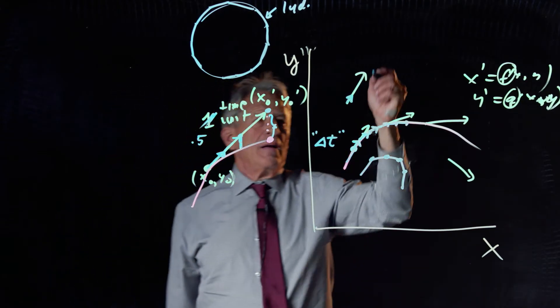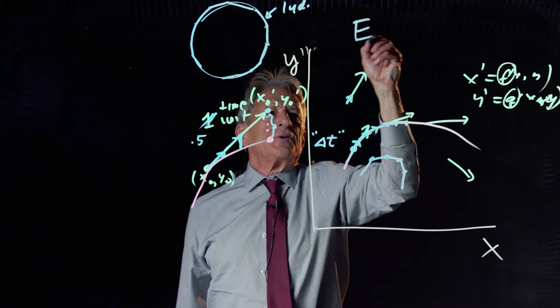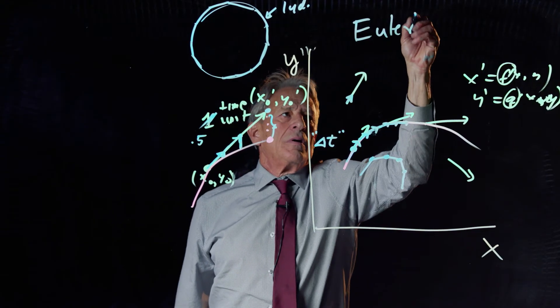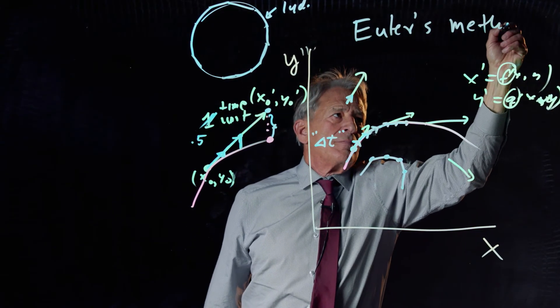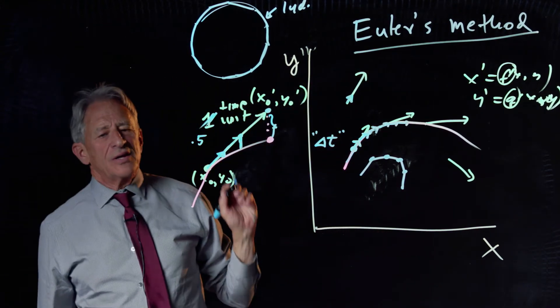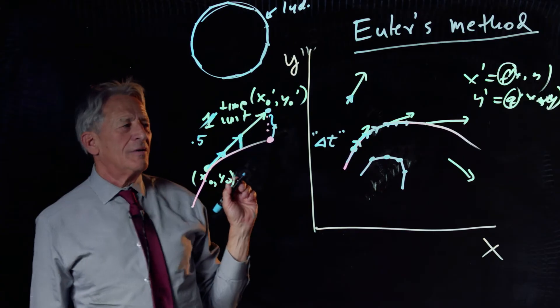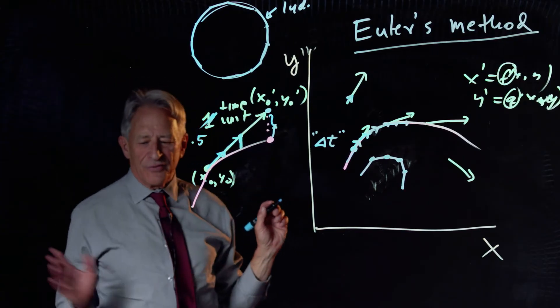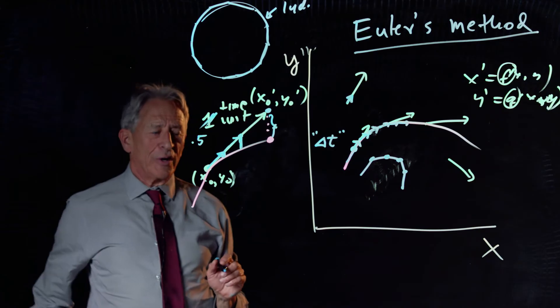So this broken blue line is the approximation that we are going to make to the red curve, and this is called Euler's method, and he doesn't like it when you call him Euler. He's been dead for 300 years, but that's okay.